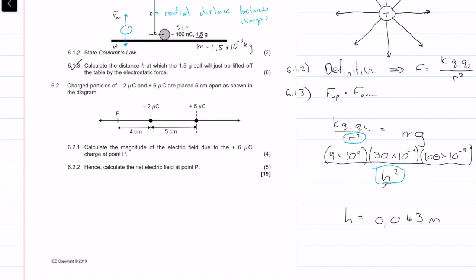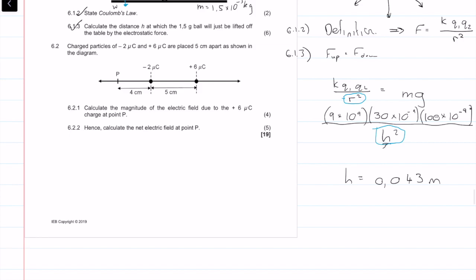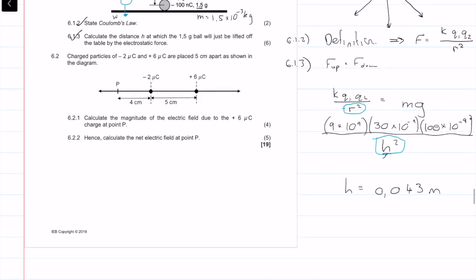We get 6 marks for that. Seems a bit generous but I'm sure you guys will take it. Charged particles of minus 2 microcoulombs and positive 6 microcoulombs are placed 5 centimeters, so that's 5 times 10 to the minus 2 meters. Remember, micro is times 10 to the minus 6.